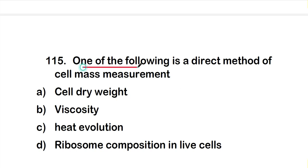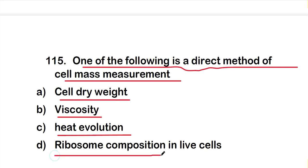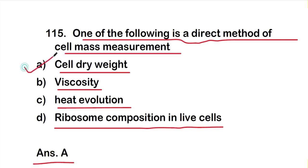Question 115: One of the following is a direct method of cell mass measurement. Option A, cell dry weight; option B, viscosity; option C, heat evolution; or option D, ribosome composition in live cells. The right answer is option A, cell dry weight. These are all the questions in Part 6 on microbial culture media. Thank you for watching.